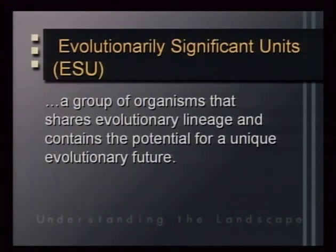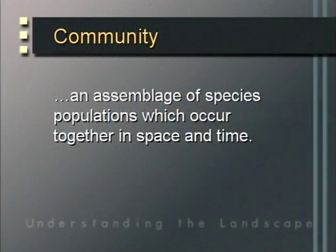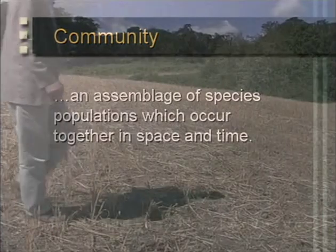The third level of biodiversity is the community and ecosystem level. A community is defined as an assemblage of species and populations which occur together in space and time. Communities occur everywhere on the landscape — they are an interacting group of plant and animal species in a particular area. For example, this recently harvested oat field could be considered a community. Communities are scale dependent; even the ruminant stomach of a cow might be considered a community, containing microorganisms that help it function properly.